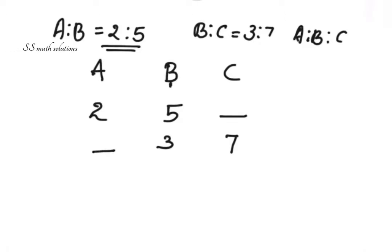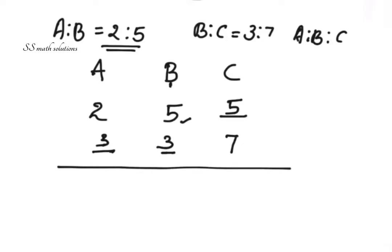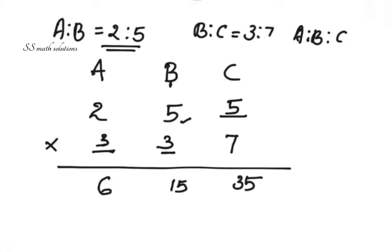Now there are empty places we need to fill. The nearest number for the empty place next to c is 5, so we keep 5 there. The nearest number for the other empty place is 3, so we arrange 3 there. Now we multiply both terms: 2 into 3 is 6, 5 into 3 is 15, and 5 into 7 is 35.